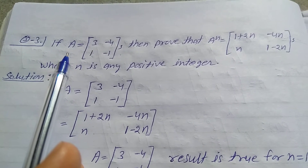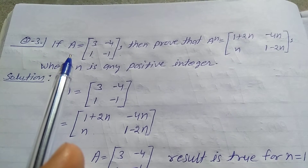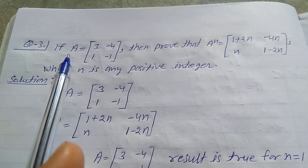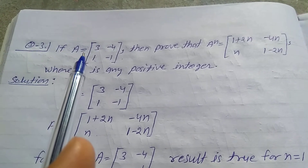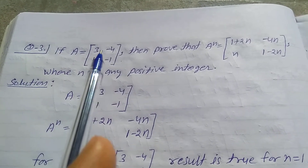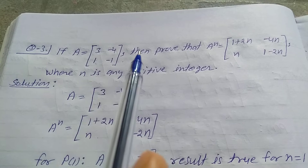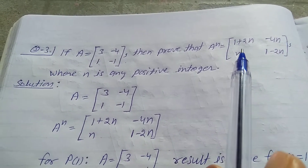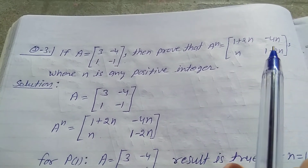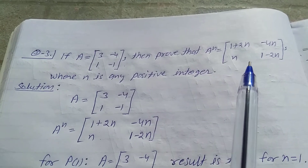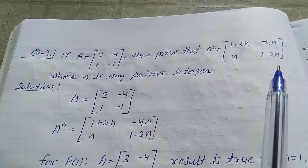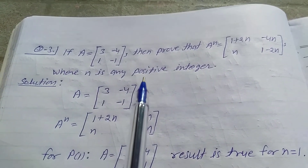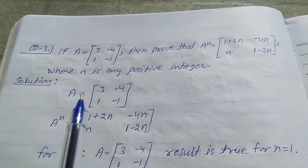Question No. 3, Miscellaneous Exercise 3, Class 12. If A is equal to the matrix of 3, -4, 1, -1, then prove that A power N is equal to the matrix of 1+2N, -4N, N, 1-2N, where N is a positive integer.